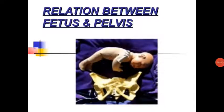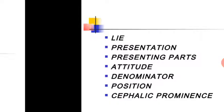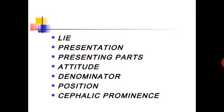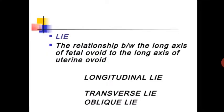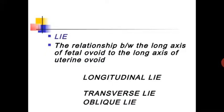Our next topic is the relationship between fetus and pelvis. We will discuss lie, presentation, presenting parts, attitude, denominator, position, and cephalic prominence. First is lie — the relationship between the long axis of the fetal ovoid to the long axis of the uterine ovoid.